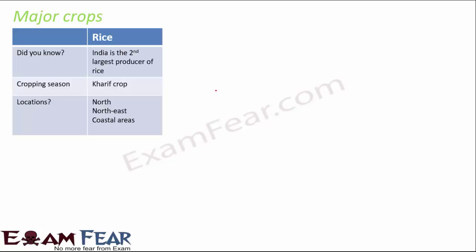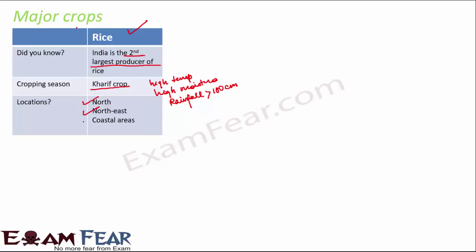We start with rice, which is a staple food in many regions in India. India is the second largest producer of rice in the entire world. Talking about its cropping season, it's a kharif crop because it needs high temperature and high moisture, and it also needs an annual rainfall of more than 100 centimeters.